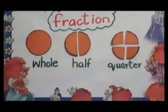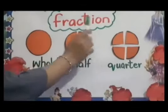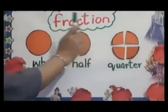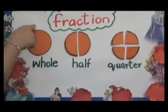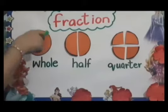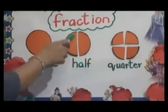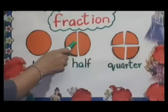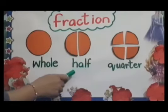Okay kids, now review time. What is this? Fraction. Repeat with me — fraction. What is this? This is whole peas. This is whole. Now look here, what is this? Think about it. This is divided into two pieces — it's called half.